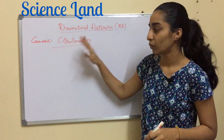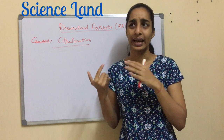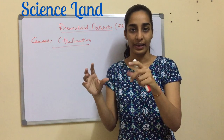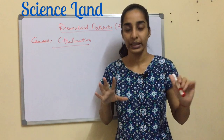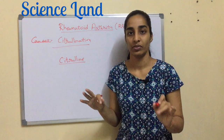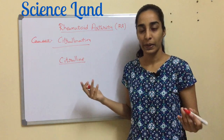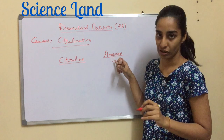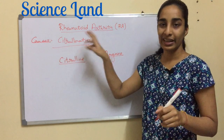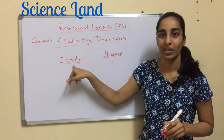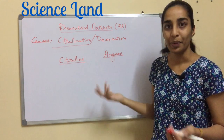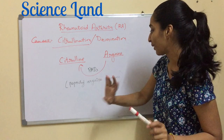The third cause is citrullination. Standard amino acids like arginine, leucine, and proline are produced by DNA. However, there is a non-standard amino acid called citrulline, which is not produced by any DNA directly. Instead, the standard amino acid arginine undergoes a process known as citrullination — also called deimination — and becomes citrulline. This is a result of post-translational modification, and it occurs in the presence of a specific enzyme.